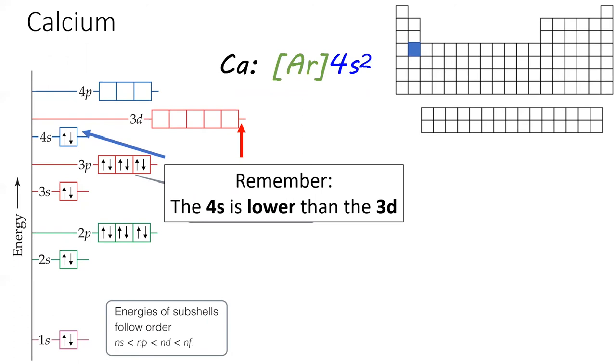Calcium has another electron, which finishes out the 4s subshell. The next element, scandium,